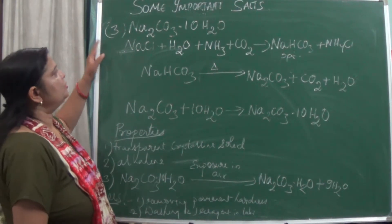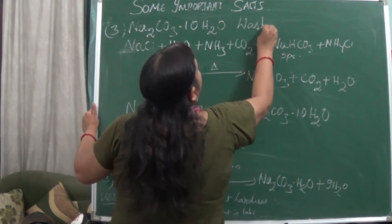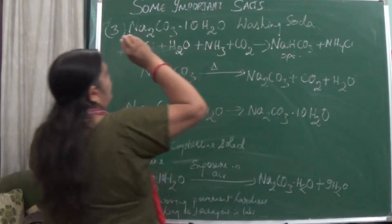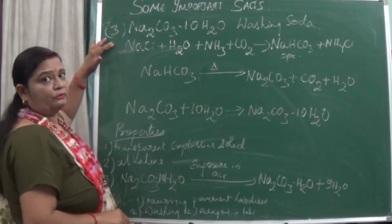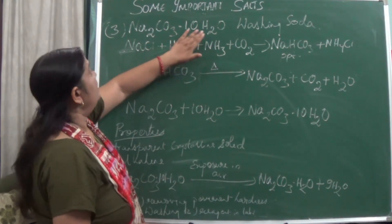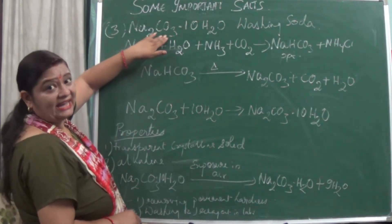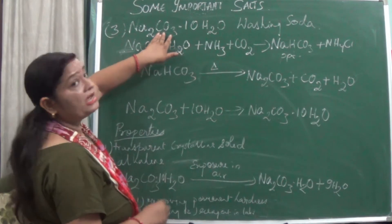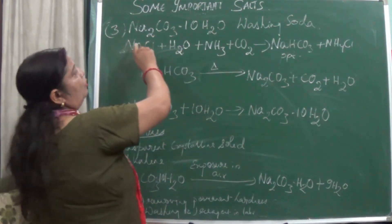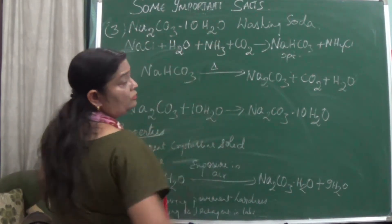The next salt is washing soda — Na2CO3·10H2O. One important thing to remember: the full formula is Na2CO3·10H2O. If you write only Na2CO3, that is soda ash or simply sodium carbonate — it is not washing soda. The complete formula including the 10 water molecules is required for washing soda.